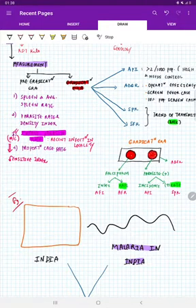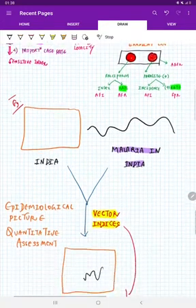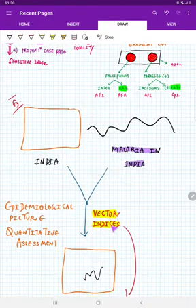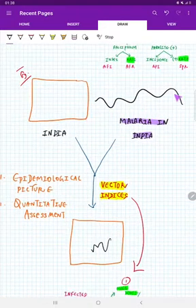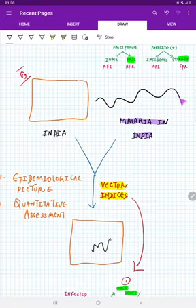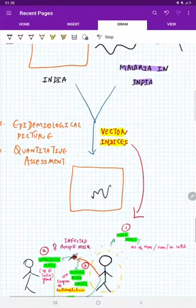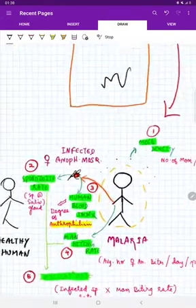Now we have seen the transmission, but we don't know where is it transmitting in India, right? So to know that, it is important to know the vector indices. By knowing vector, this is what we know: the epidemiological picture of malaria and quantitative assessment of malaria. In eradication era, just to make a pictorial representation, this is malaria in India what we have seen, but with use of vector indices you are going to see the epidemiological picture of malaria in an area. Now this is the diagram.